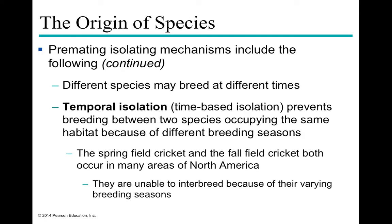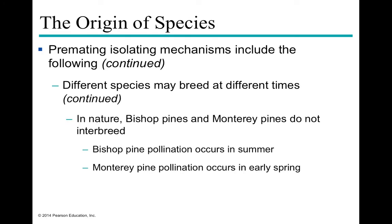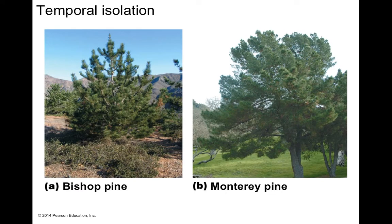Another pre-mating mechanism is temporal isolation — time-based isolation where two species have different breeding seasons. One breeds in spring versus fall, or one is nocturnal and the other diurnal. An example is the bishop pine and the Monterey pine. Although found in the same forest and same location, bishop pine pollination occurs in summer whereas Monterey pine pollination occurs in early spring, so they're never able to cross-pollinate one another.